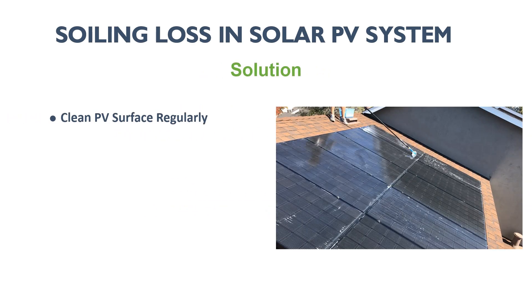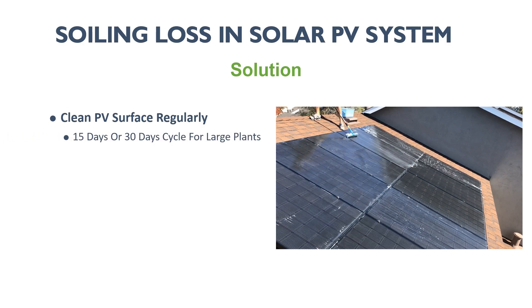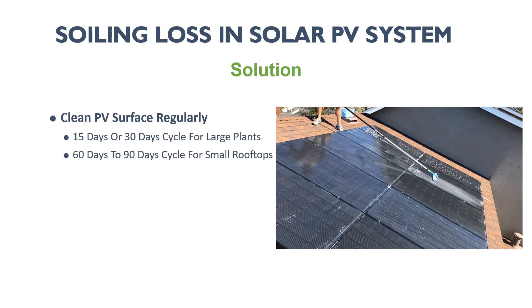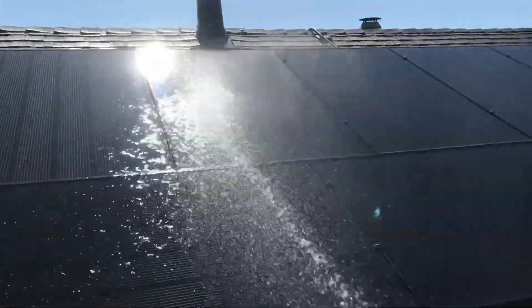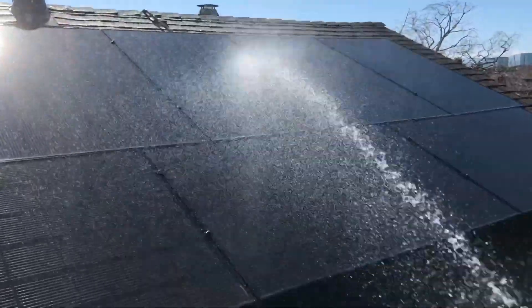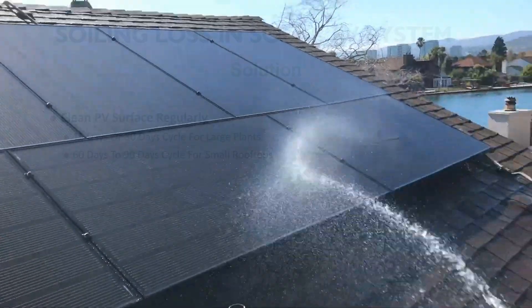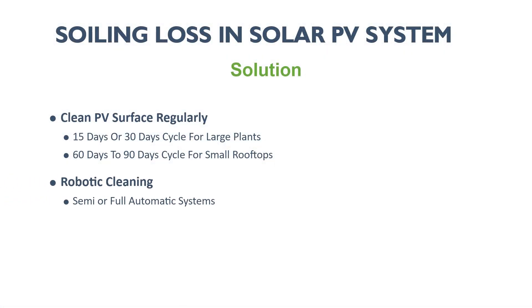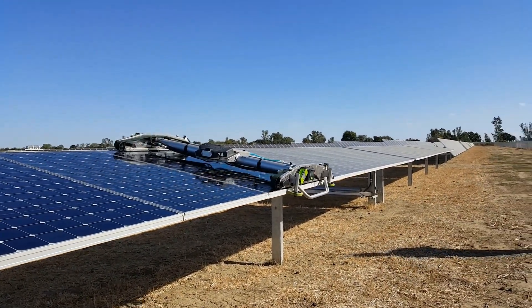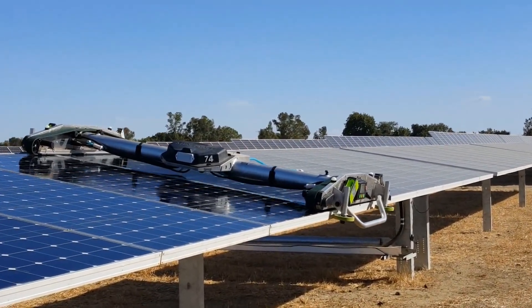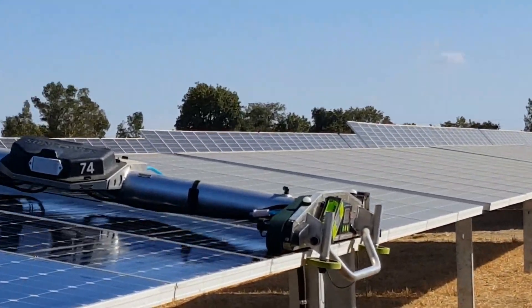To reduce soiling loss, the only option is to clean the PV surface regularly. For large-scale solar plants, a 15- to 30-day cleaning cycle is normally followed. For smaller systems up to 100 kilowatt-peak rooftop systems, one can follow a 60- to 90-day water-based cleaning cycle. Nowadays, robotic cleaning is very popular in the PV market, and implementing robotic cleaning into your plant is a very good way of preventing soiling loss.